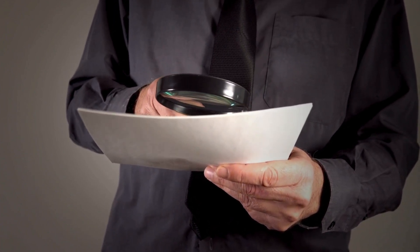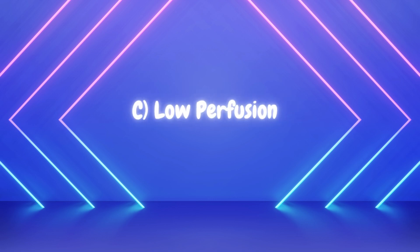Question one: which of the following is another way of describing the condition of shock? Internal bleeding, hypotension, low perfusion, or hemorrhage. Internal bleeding and hemorrhage both lead to hypovolemia — that's one specific category. Hypotension just refers to the stage of compensation. So low perfusion is the answer. National Registry normally says hypoperfusion, which is accurate, but understanding the concept matters more than exact vocabulary.